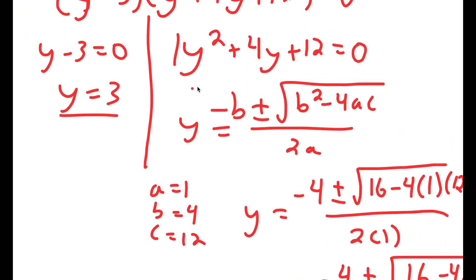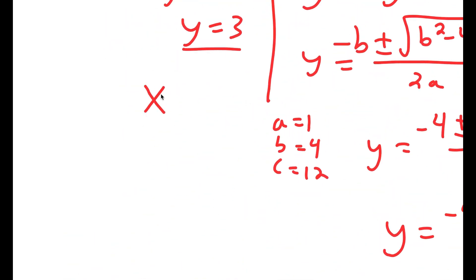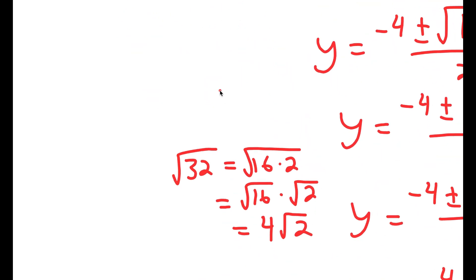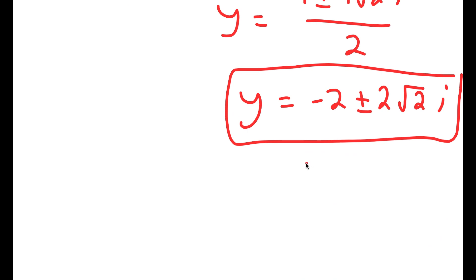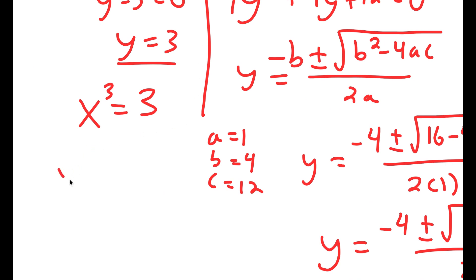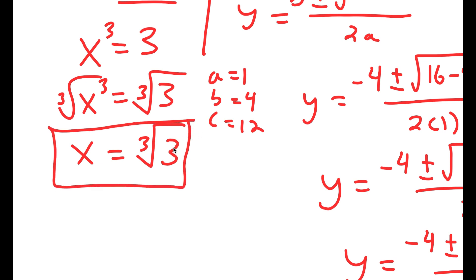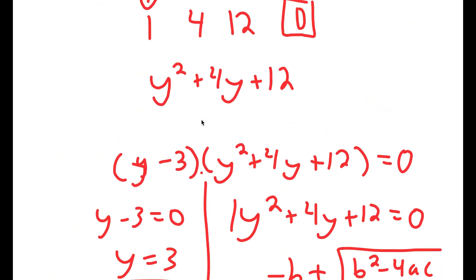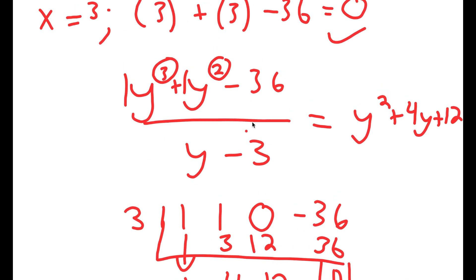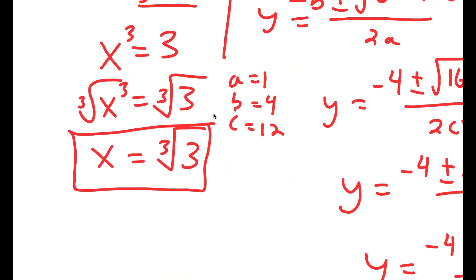So I have three solutions for y. However, we aren't done yet, because remember I let x to the power of 3 equal to y. So I get x to the power of 3 is equal to 3. The other y values are imaginary numbers, which we can't use, so the only solution I can use is y equals 3. Taking the cube root on both sides gives x equals the cube root of 3. This is my solution. Remember, whenever you're solving problems like these, find one solution first, then use synthetic division to find the remaining solutions.